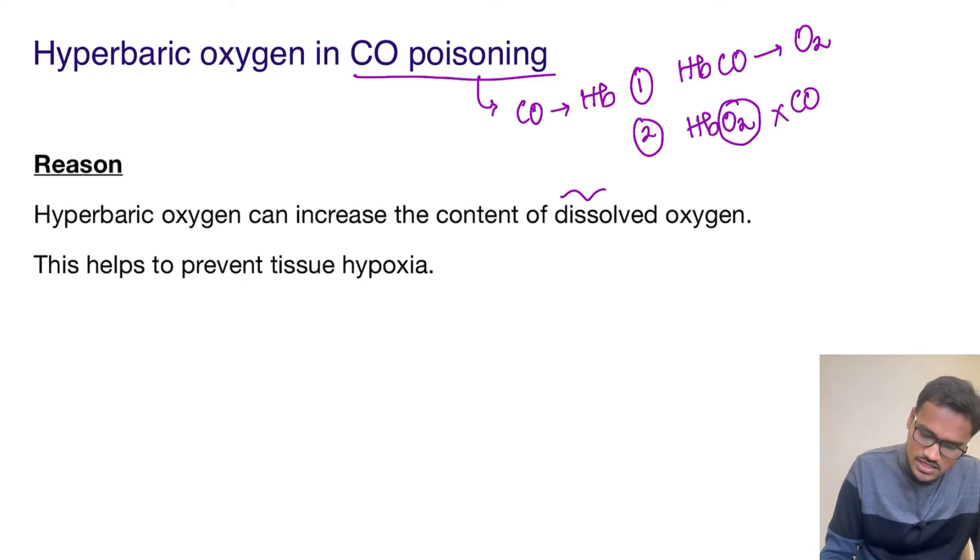There is one more form of oxygen called dissolved oxygen. So what we have to try to do is increase the level of this dissolved oxygen so that the tissue hypoxia is prevented. Let's take an example.